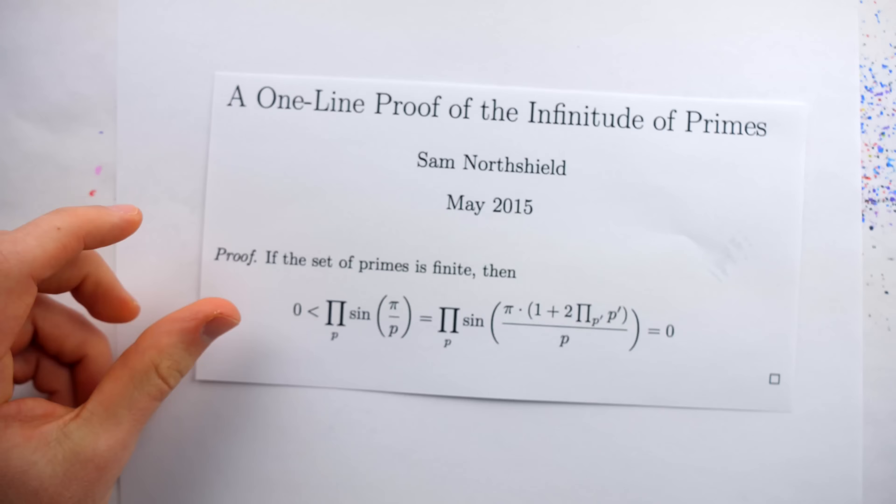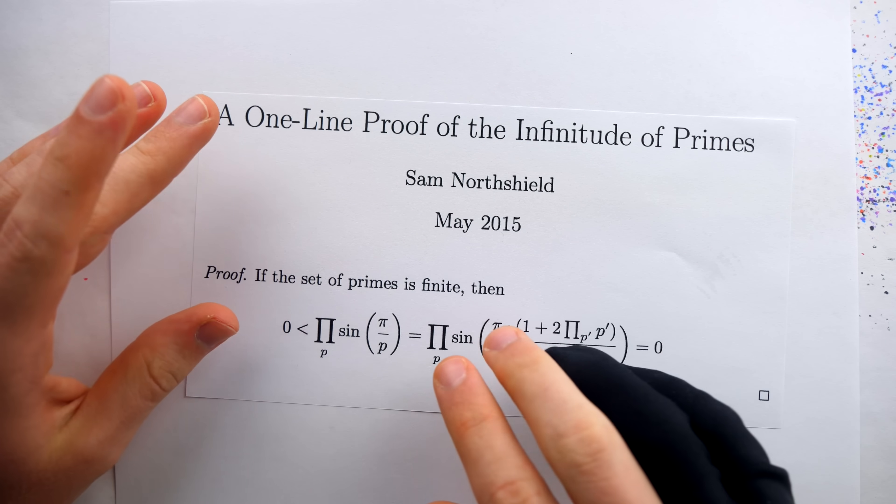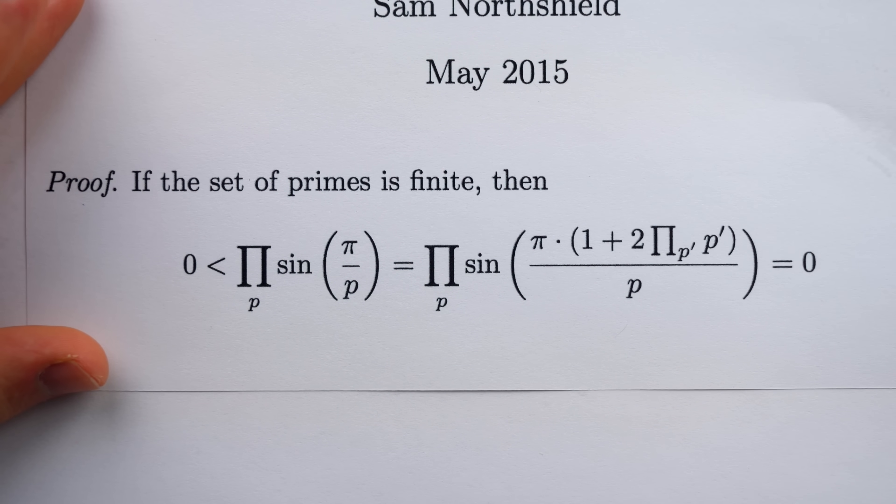First, we'll get a little bit of context to make sure we understand the proof, and then we'll jump into a quick discussion to explain how this one line proves there are infinitely many primes.